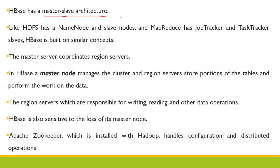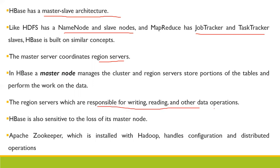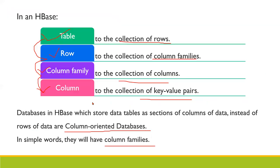HBase uses a master-slave architecture. Like HDFS with its name node and slave node, and MapReduce with job tracker and task tracker, HBase is built on similar concepts. The master server coordinates the region servers; region servers store portions of tables and perform work on data including reading, writing, and other data operations. HBase is sensitive to the loss of its master node. Apache Zookeeper, installed with Hadoop, handles configuration and distributed operation.